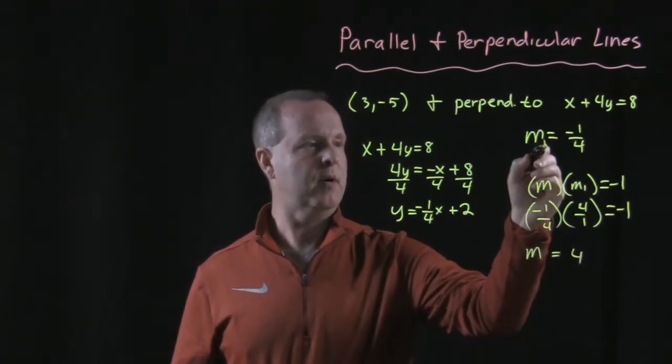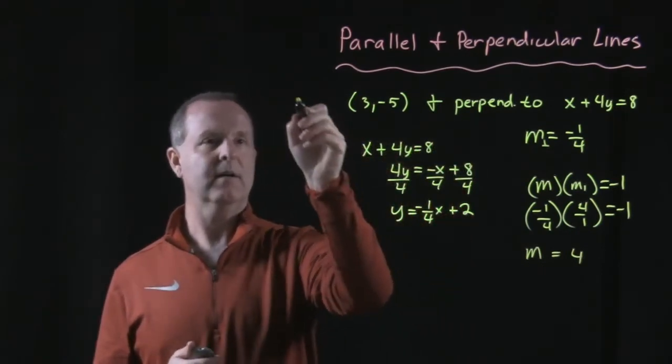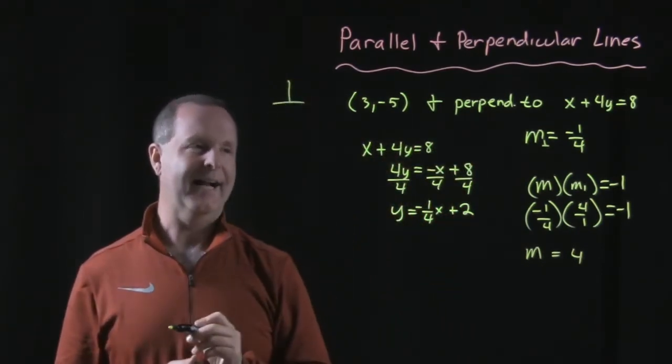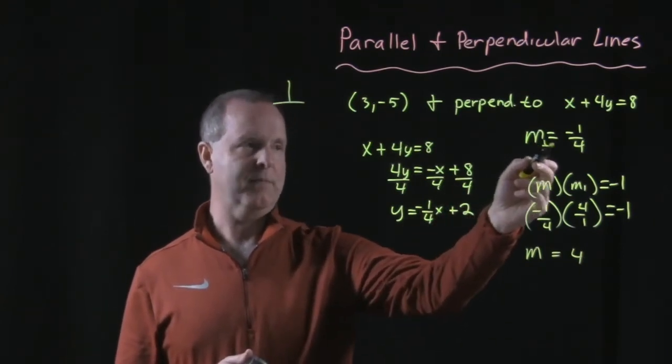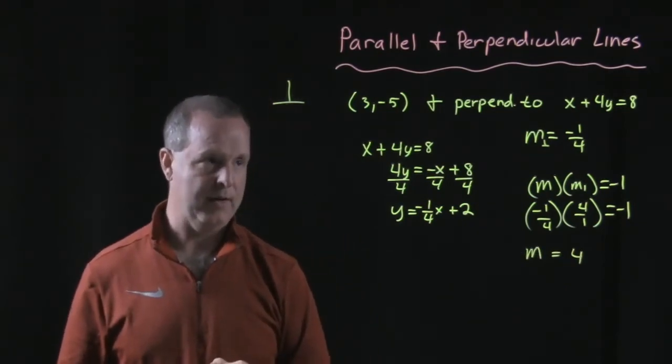I'm going to put a little perpendicular symbol right there. The notation we use for perpendicular is that. So I'm just going to put that in the subscript to let me know that that's the perpendicular slope, and the slope I'm looking for doesn't have that notation.